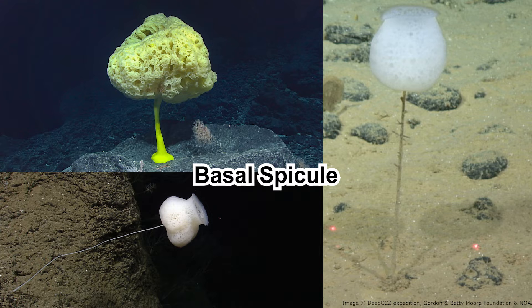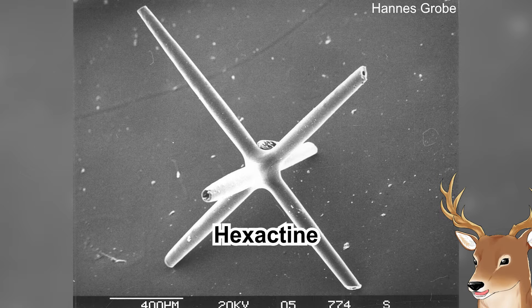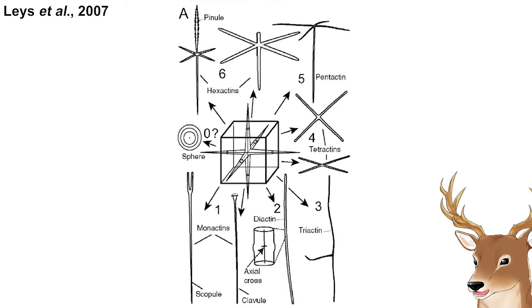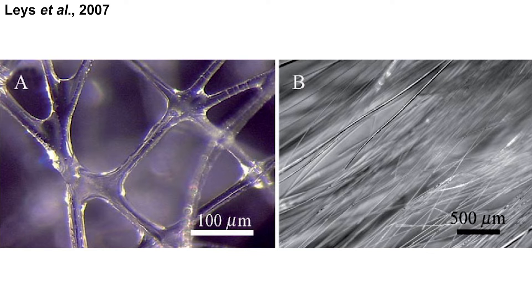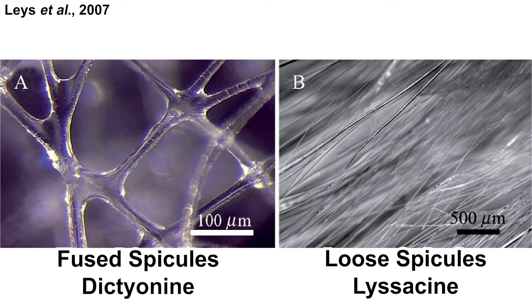That stalk is their basal spicule. What makes glass sponges hard and glassy are their spicules. In glass sponges, their spicules are made out of silicon oxide, usually with six points, called hexactine — hence the class name Hexactinellida. Even so, there are many derived forms of these spicules. These spicules are distributed on their body — think of it like a skeleton. There are two different forms of spicule skeleton that can be found in glass sponges.